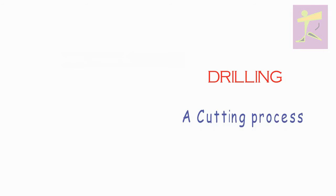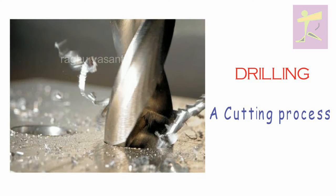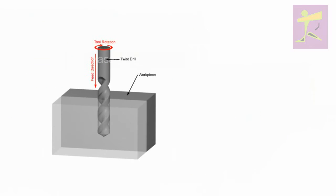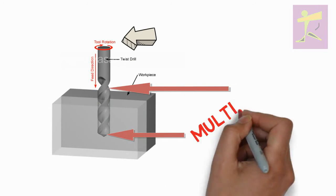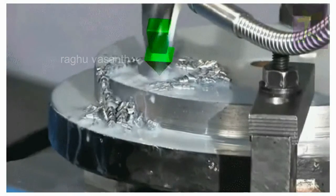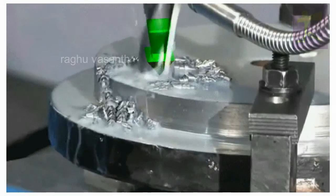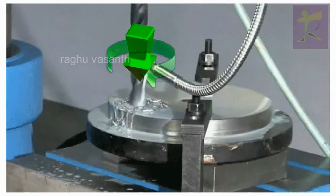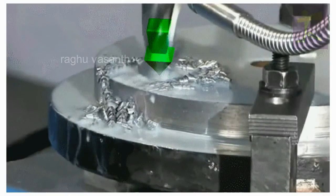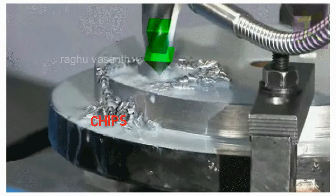Drilling is a cutting process. A drill bit is used to cut a hole of circular cross section in solid materials. The drill bit is usually a rotary cutting tool and a multipoint cutting tool. The drill bit is pressed against the workpiece and rotated at rates from hundreds to thousands of revolutions per minute. This forces the cutting edge against the workpiece, thus cutting off chips from the hole as it is drilled.